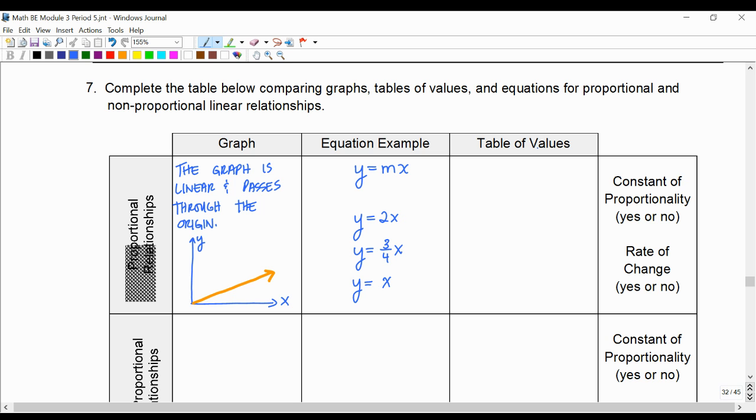And then what happens with the table for a proportional relationship? The y over x ratio is constant. And because it is constant, it has a COP. So we'll circle yes. And it has a rate of change because all lines have to have a rate of change.